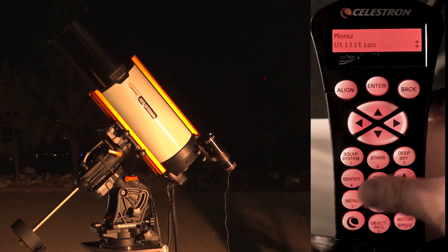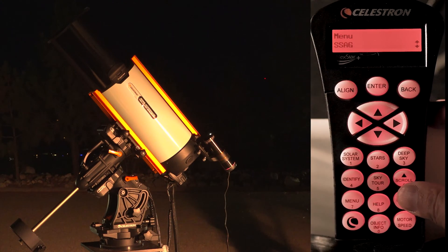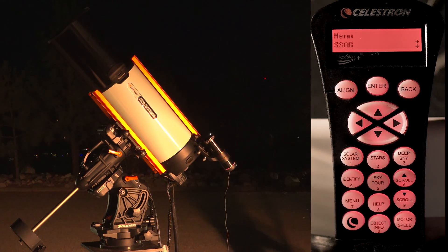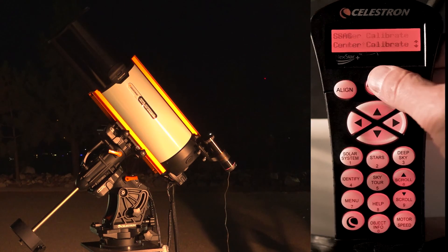So I'm just going to press the menu button here, and I'm going to navigate until I find the StarSense Autoguider. Here we are. I'm just going to press enter to enter the menu, and you just scroll until you find center calibration.